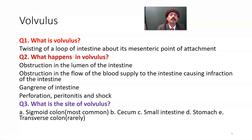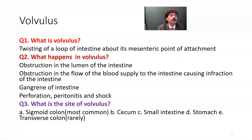What is volvulus? Volvulus is the twisting of a loop of intestine about its mesentery point of attachment. We know that intestines are connected to the posterior abdominal wall by the mesentery. So if there is any twisting of the mesentery, then we will get volvulus.